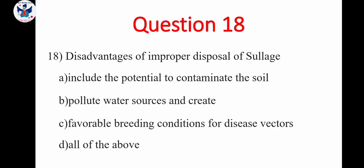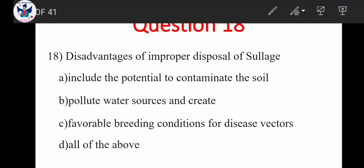Next, question 18. Disadvantages of improper disposal of sewage. Option A, include the potential to contaminate the soil. B, pollute water sources and create. Next, C, favorable breeding condition for disease vectors. D, all the above. So here, if we are not disposing the sewage properly, these all the three options will be there. So the answer is all the above.